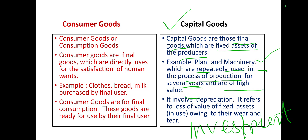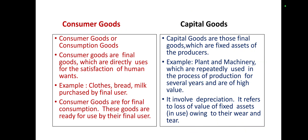Note: raw material used in the production process is not a capital good. Capital goods are fixed assets which are repeatedly used in the process of production for several years, are of high value — like plant and machinery. These fixed assets are the capital goods, and capital goods also involve depreciation.